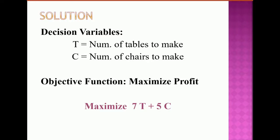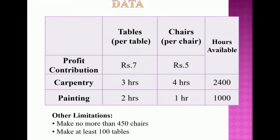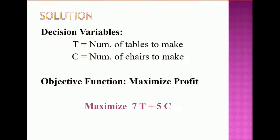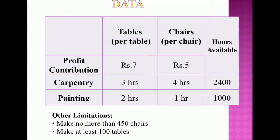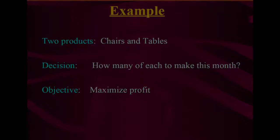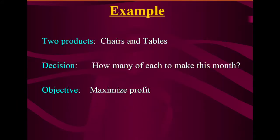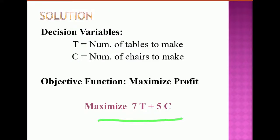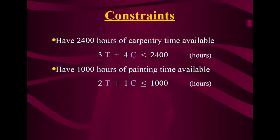Now we frame the objective function to maximize profit from chairs and tables. The profit is rupees 7 per table and rupees 5 per chair, so the objective function is: Maximize Z = 7T + 5C. That is how we derive the objective function from the given profit contributions.